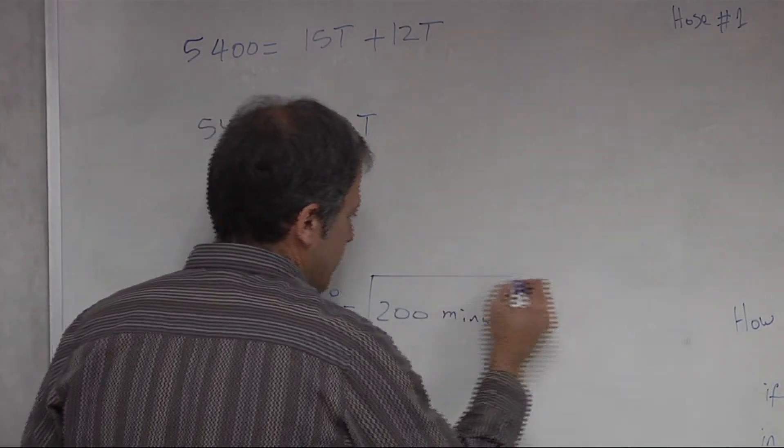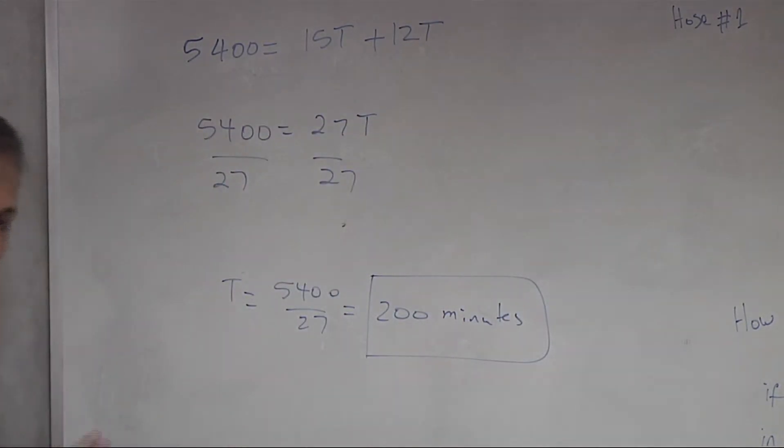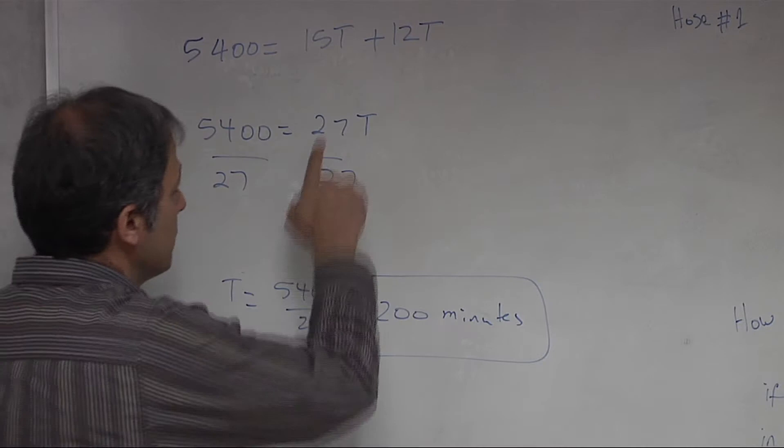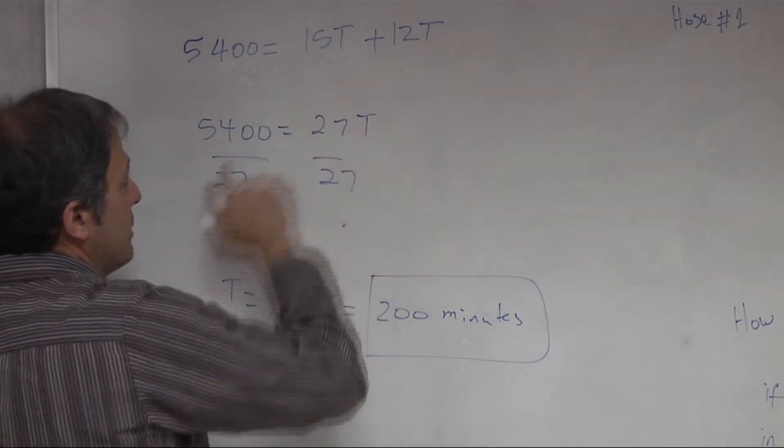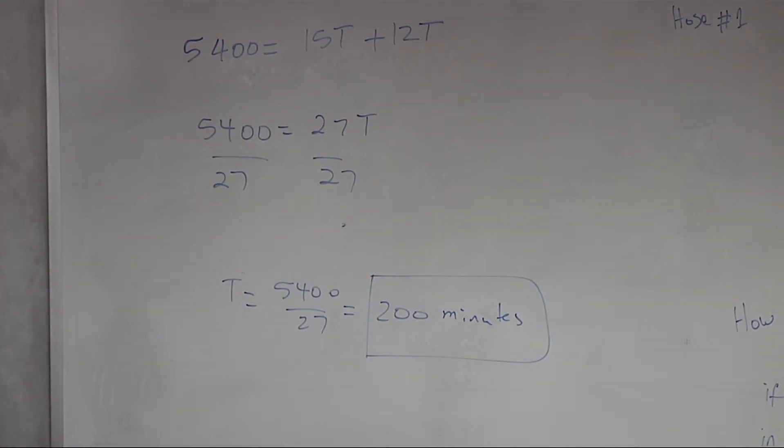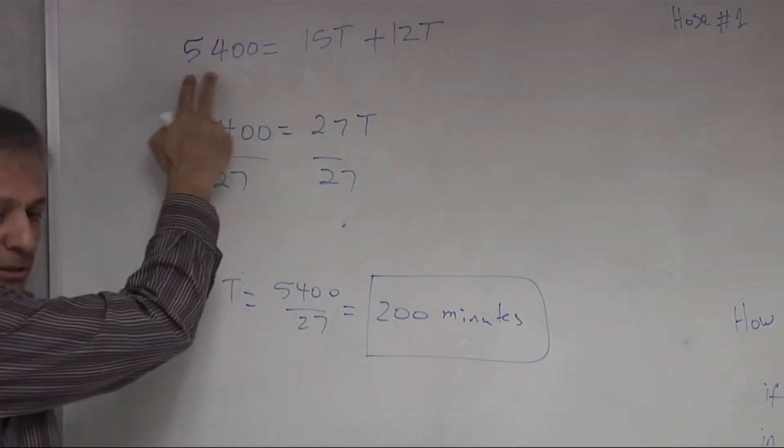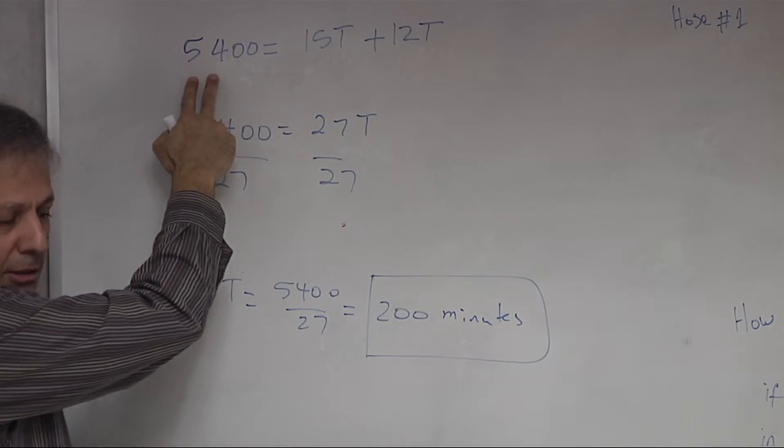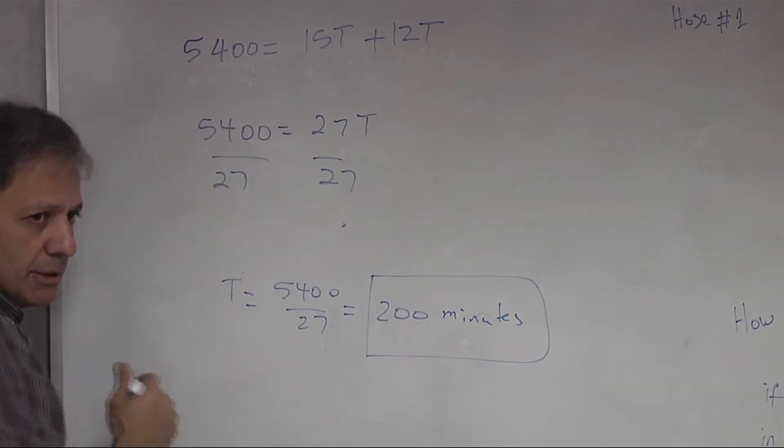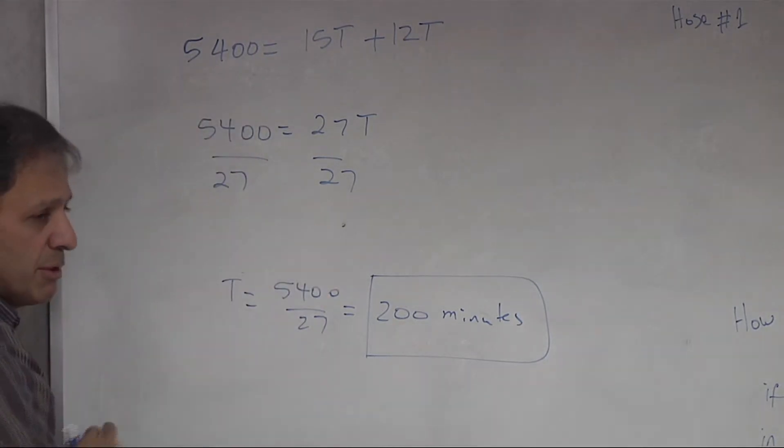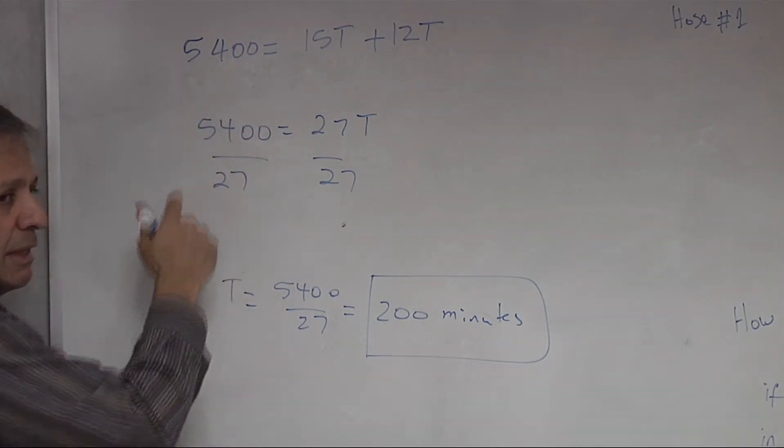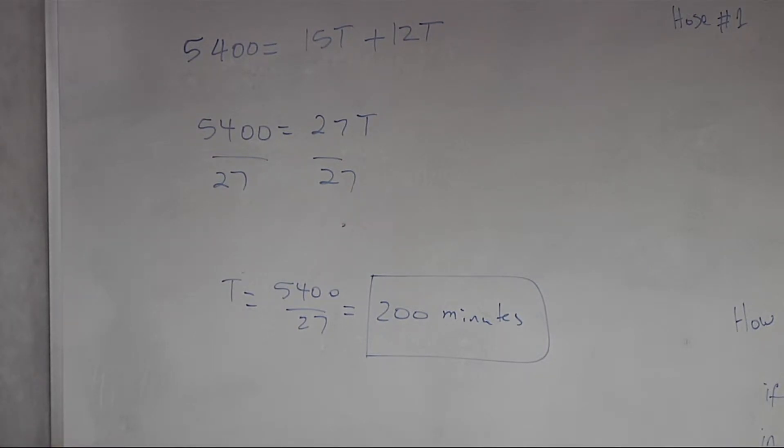So that's how you can answer that question. Notice that it's almost the same kind of model that we use for the motion problems. We have a rate here times the time, and another rate times time. In the motion problems this side was the distance, right? This side was equal to d, the distance. But here in terms of the pond problem, this side of the equation is now the capacity of the pond.